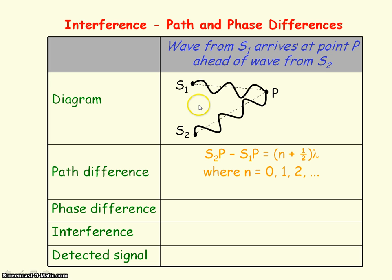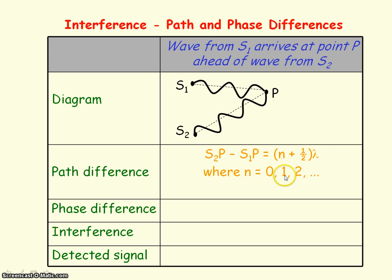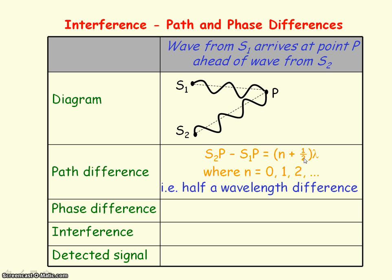If we now consider the case where the path difference is (N + ½)λ, where N is an integer: when N equals zero the path difference equals half a wavelength; when N equals one it is one and a half wavelengths; when N equals two it is two and a half wavelengths. So there's this additional half wavelength difference between the waves when they arrive at point P.